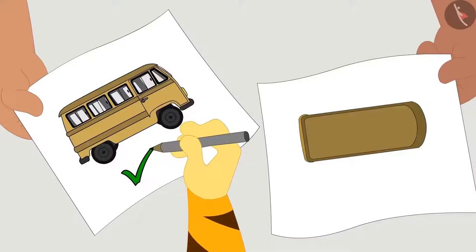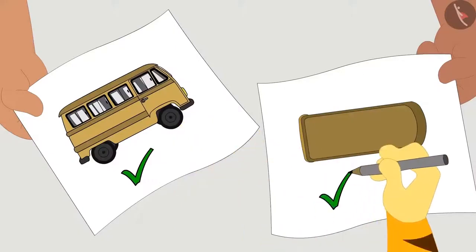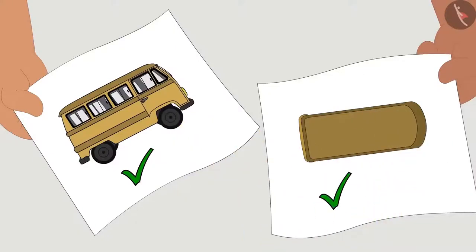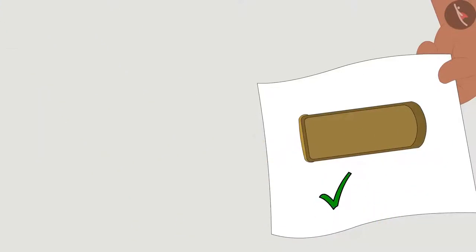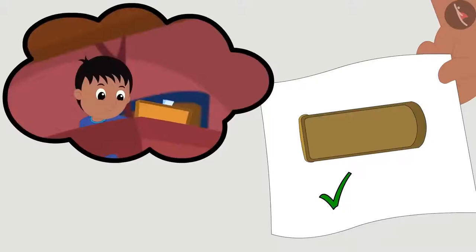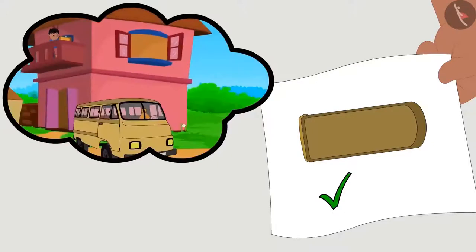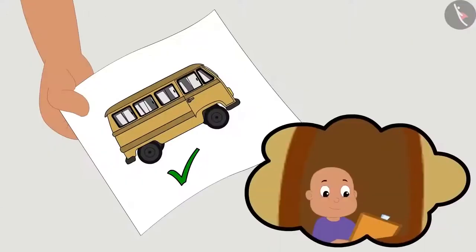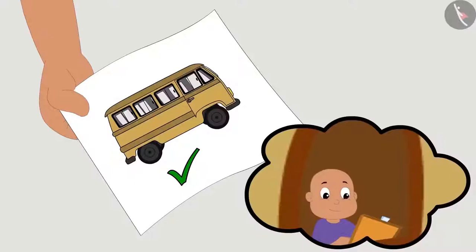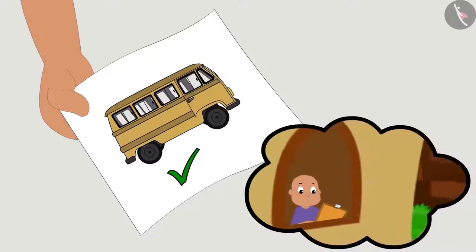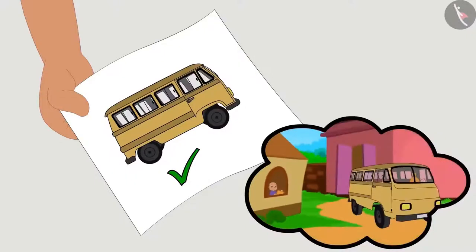In fact, the drawings of both Raju and Bablu are correct. Raju had drawn the top view of the bus, whereas Bablu saw the bus from the side while drawing it.